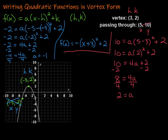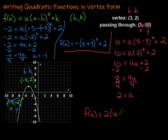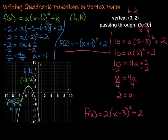Now I'm done with this — I want the h, k, and a dropping into my vertex form. So f of x equals my a, which is 2, times x minus h. My h is 3, so x minus 3, quantity squared, plus k, which is 2. And there's my function. Once you get your function written, it's a good idea to graph it and check: is this point the vertex, and does it pass through this point? If it does, life is good. If not, we can double check and see where we went wrong.